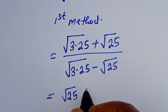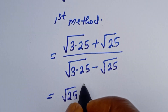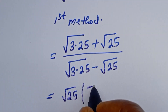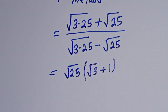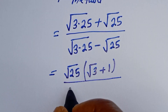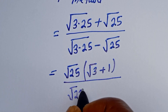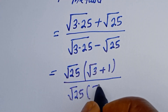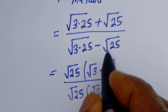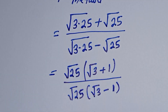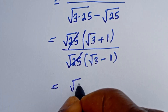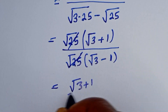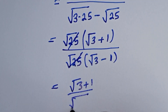Square root of 25, bracket — if you divide this by this we have square root of 3, plus if you divide this by this we have 1 — then divided by square root of 25, bracket — if you divide this by this we have square root of 3, divide this by this we have minus 1. This will cancel this. Then we have square root of 3 plus 1 divided by square root of 3 minus 1. Then we can rationalize this.